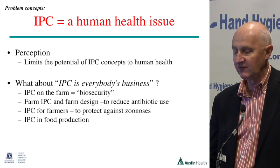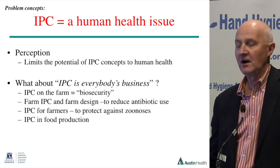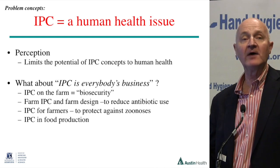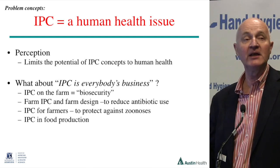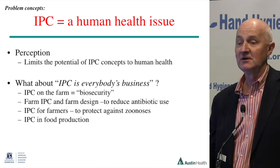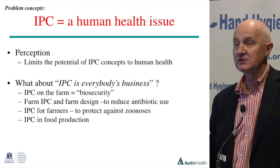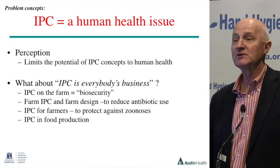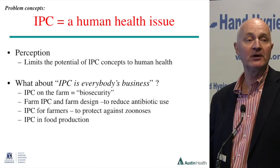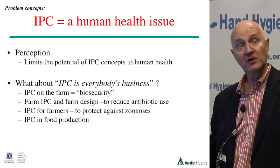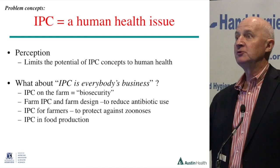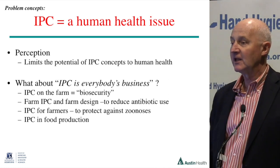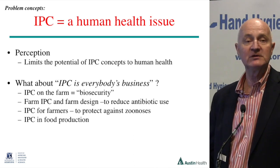Currently, framing IPC as a human health issue limits its potential. If we talked about IPC as everybody's business, what about the farm? Because 85% of Australia's antibiotics are used in agriculture, not in human health. If we actually started using IPC in farms — they use the word biosecurity — farm design incorporating hospital concepts of infection control would help reduce antibiotic use on farms, also protecting farmers. I know people who do vaginal exams on their cows to turn a calf around without wearing gloves, and then wonder why they get leptospirosis.